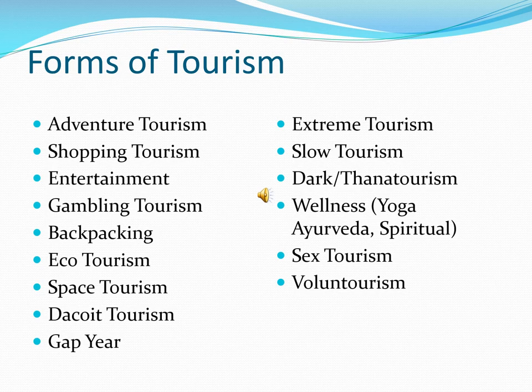Dark tourism and thanatourism involve going to places where dark historical events occurred — massacres, deaths, crusades. A famous destination is the Auschwitz concentration camp from the Nazi period, where many people were killed. Wellness tourism deals with maintaining the health of body and mind through participation in yoga, Ayurveda, or spirituality.